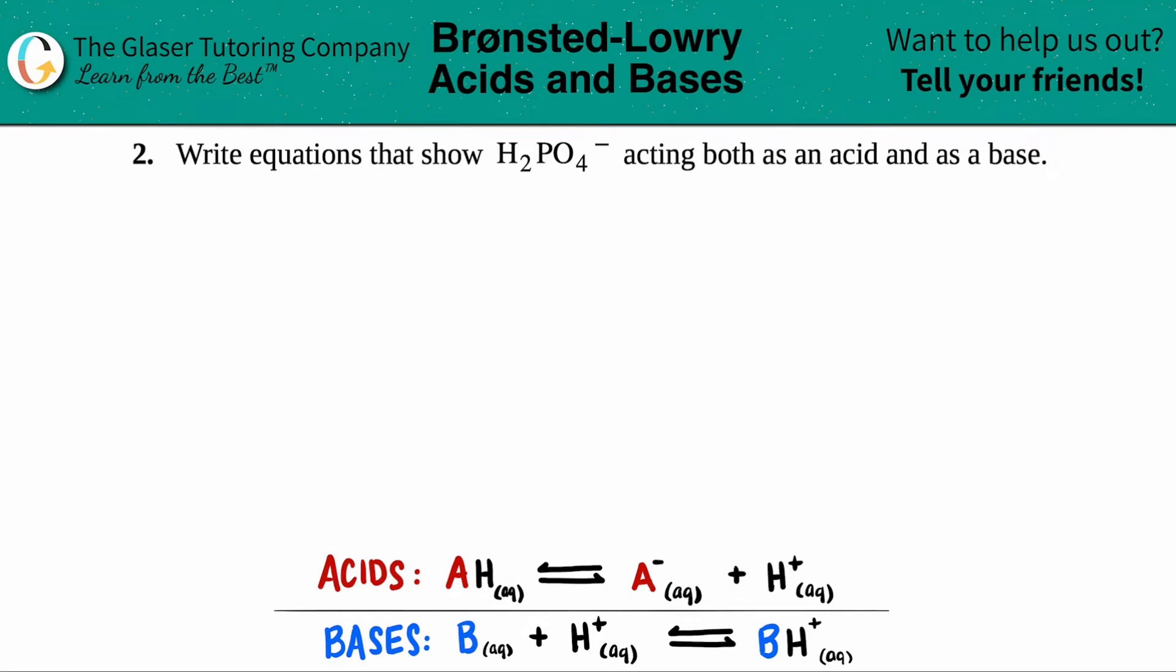Number two, write equations that show H2PO4- is acting as both an acid and a base. So in this case, we have two answers. We need to write two equations, one in which H2PO4- is acting as the acid and then acting as the base. So let's get started.